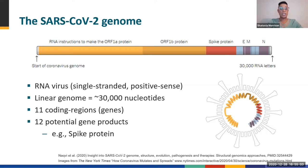The genome includes 11 genes, which encode the instructions for approximately 12 products. For example, you have likely heard about the spike protein, whose gene is marked here in red. A single copy of this linear RNA molecule is packaged inside of every SARS-CoV-2 viral particle.